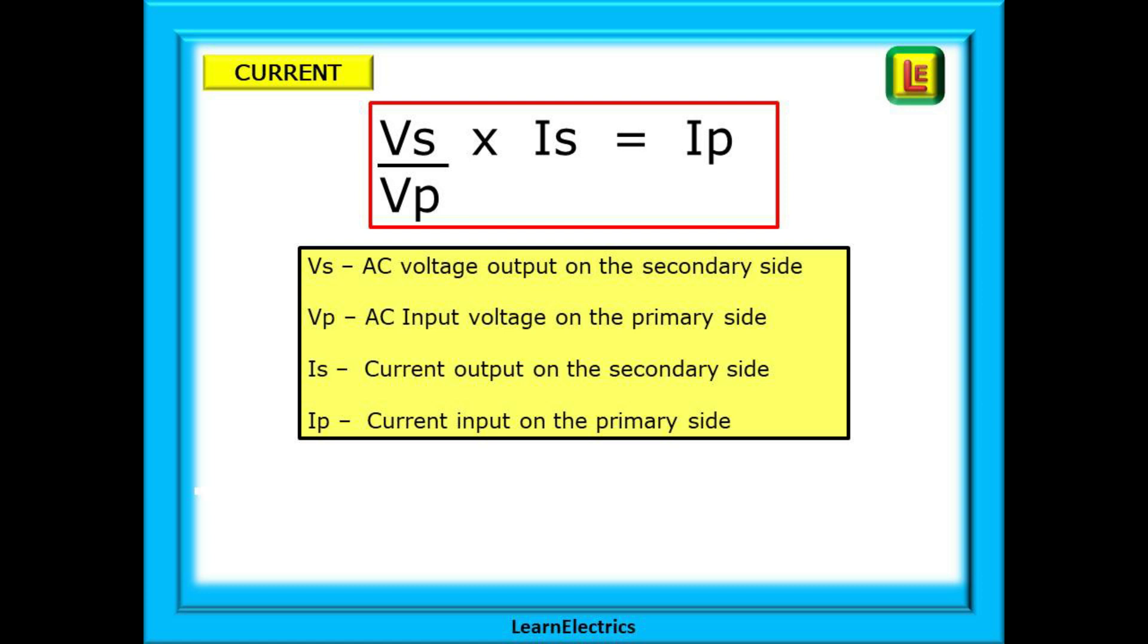Of course, in real life, we wouldn't know the turns ratio, but we should know the primary and secondary voltages, and the current demand in amps of the secondary side. This formula shows us that if we divide the secondary voltage by the primary voltage, and then multiply this by the secondary current, we will find the primary input current of the transformer.